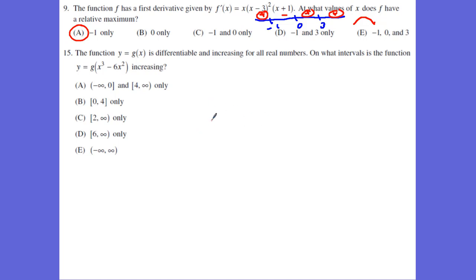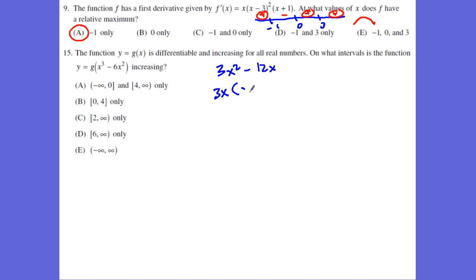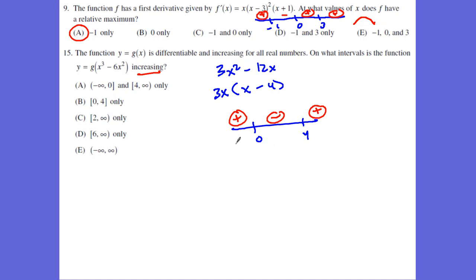For number 15, we have a function where g is differentiable and increasing for all intervals. We want to take the derivative of the inside function, which is 3x squared minus 12x. We can factor out a 3x to get 3x(x minus 4), which means we have critical numbers at 0 and 4. Plugging in values less than 0 gives positive; between 0 and 4 gives negative; and any numbers bigger give positive. So the function is increasing from negative infinity to 0, and from 4 to infinity, which is answer A.